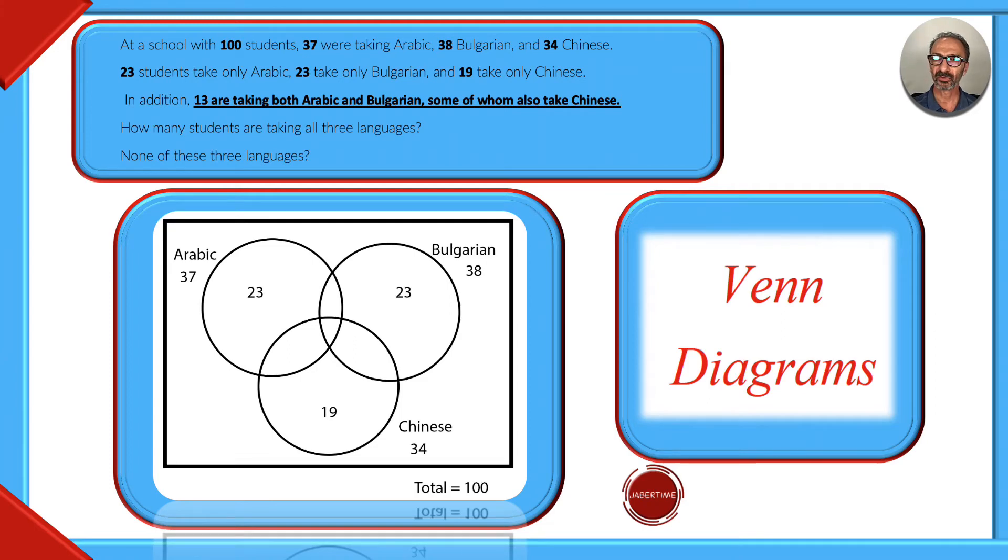Hi, let's go over this Venn diagram problem. At a school with 100 students total, 37 were taking Arabic, 38 were taking Bulgarian, and 34 were taking Chinese.